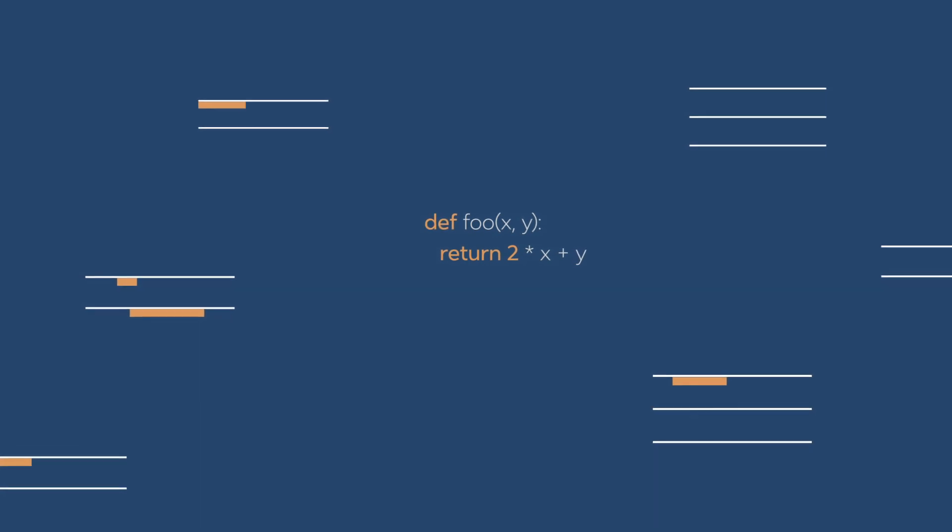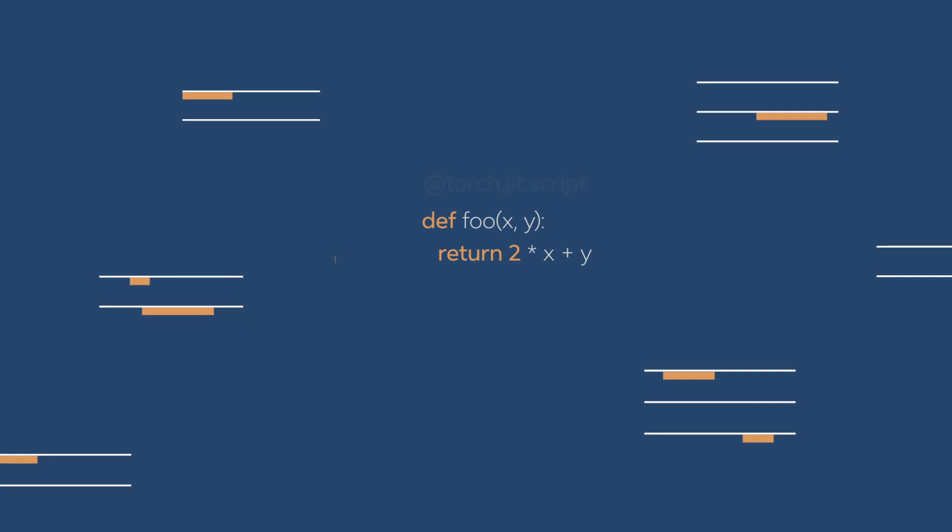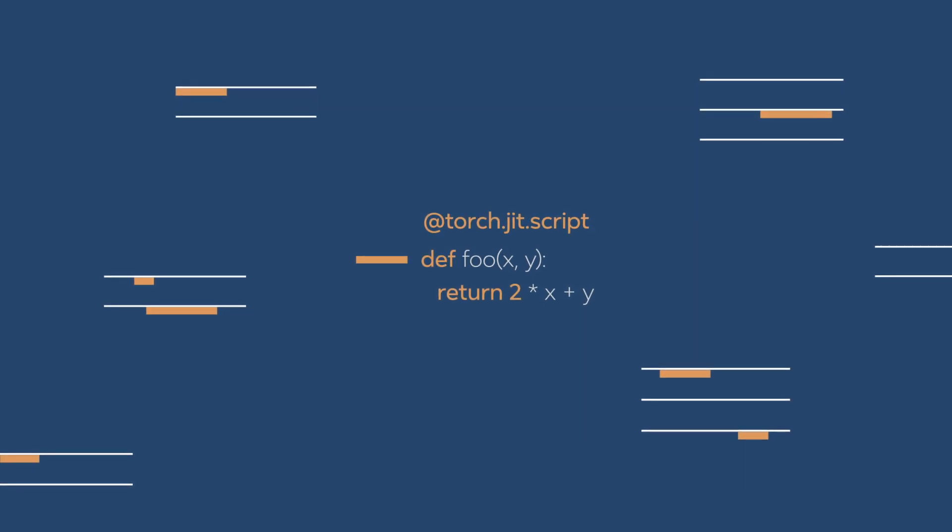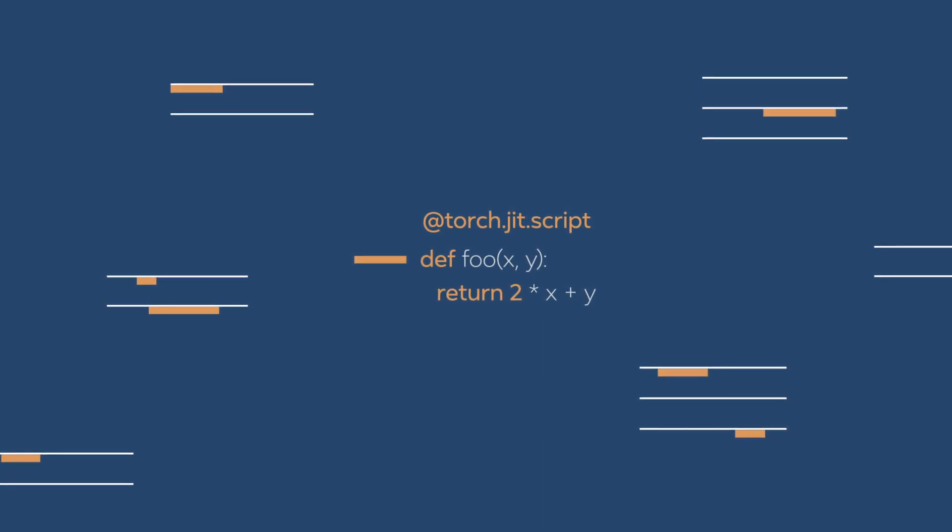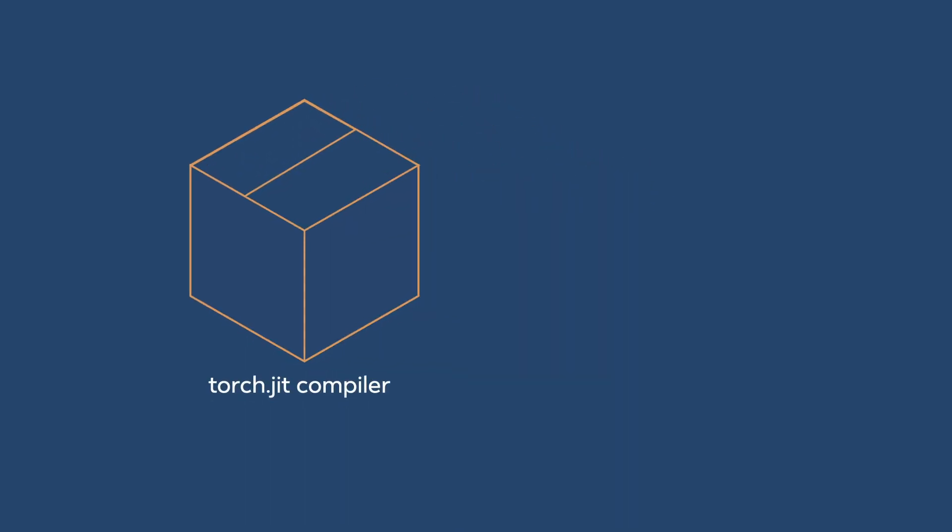In this subset of Python, if you annotate your code to say my code is TorchScript compatible and it can be run by a torch.jit compiler, then our compiler takes the code, it analyzes it, it modifies it, and it will run it faster and it can export it into our own intermediate representation. And you roughly get all the benefits of a compilation process that you would expect.